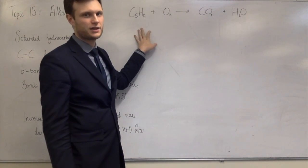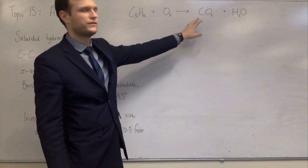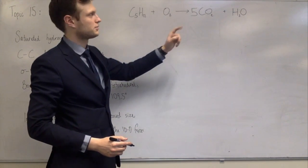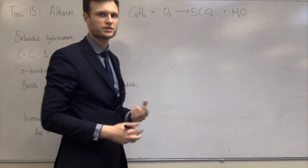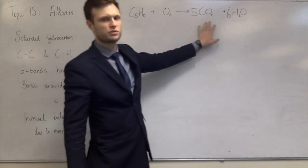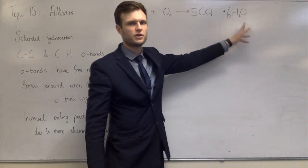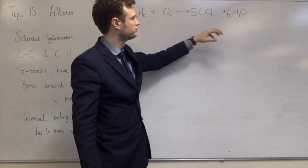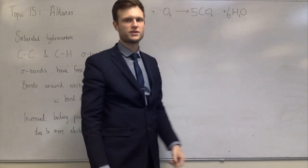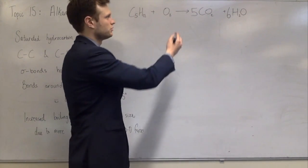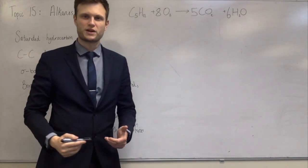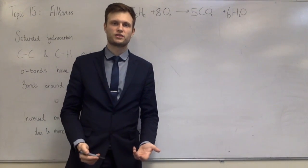There are five carbons in pentane, so you get five CO2. There are 12 hydrogens in pentane, so you end up with six H2O, because each water has two hydrogens. To work out the number of oxygens, you add up the number of oxygen atoms on this side and divide by two. So 10 for the carbon dioxide plus 6 for the water is 16 — divide that by two and you have eight O2 molecules.